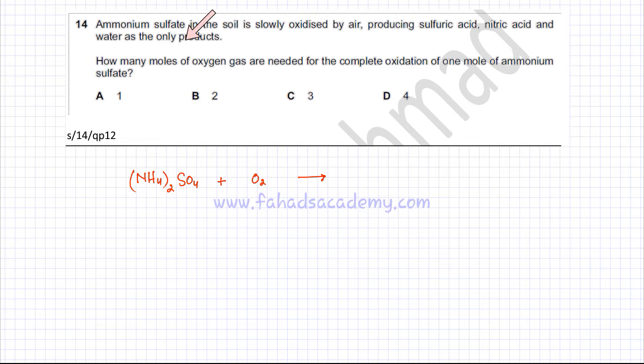Sulfuric acid is H2SO4. Nitric acid is one of the products, which is HNO3, and you have water as one of the products. We need to balance this equation.